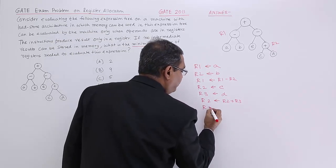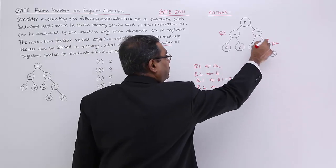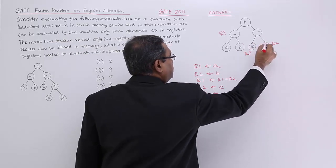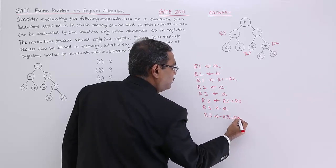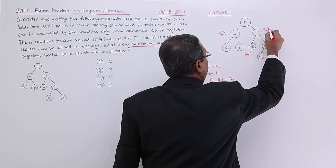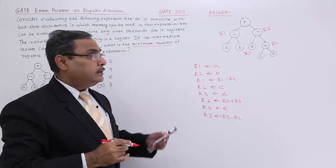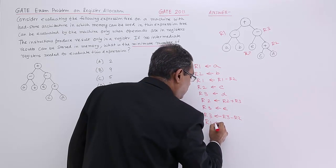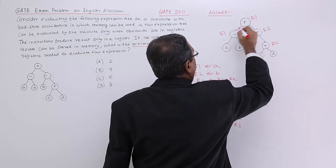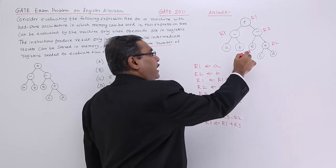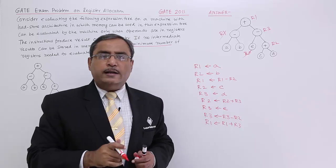So I put E in R3, then I go for the subtraction: R3 is equal to R3 minus R2. The result produced has been kept in R3. Now addition is only pending, so I go for R1 is equal to R1 plus R3. This final result is now in R1, while R2 and R3 are containing the temporary or intermediate results.